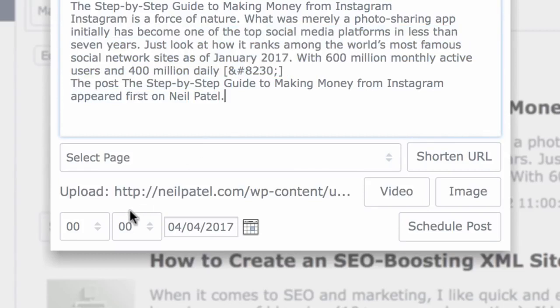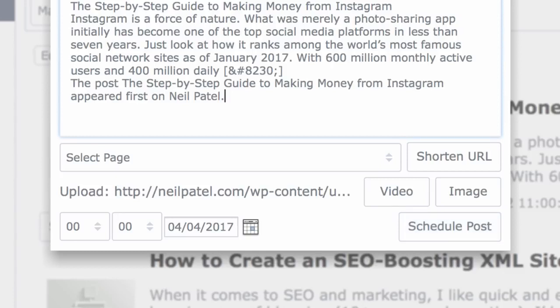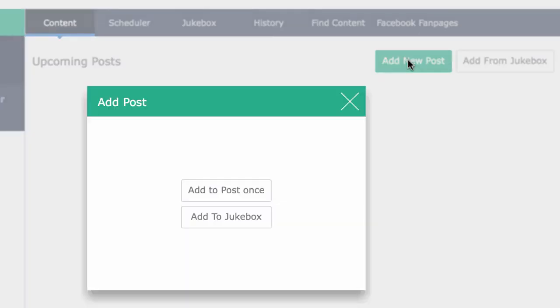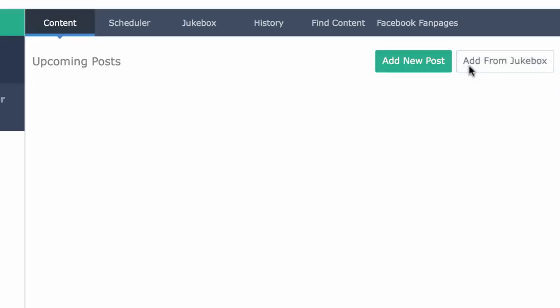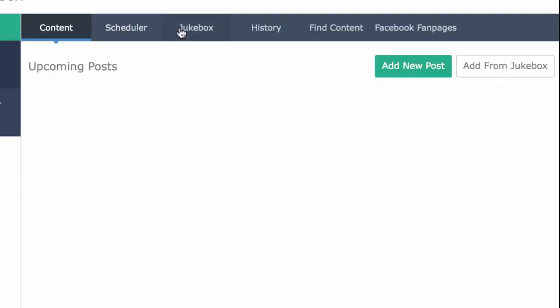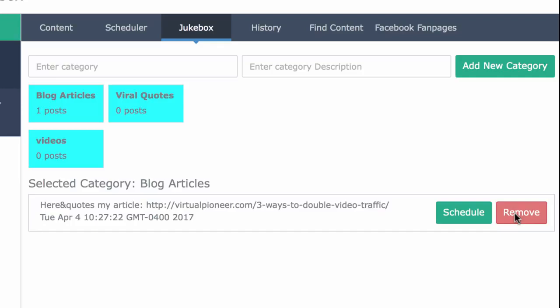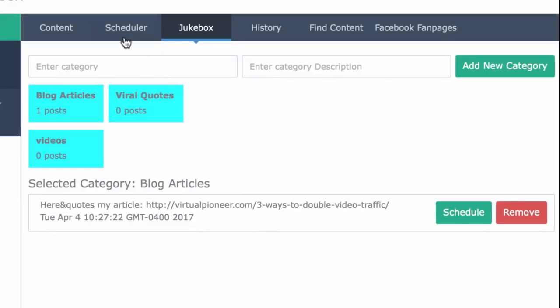And I don't have any unique content available, but can still grow my fan page and get traffic. And if you want to just schedule a one-time-off article or video, you can easily create a new one and schedule it that way, or add an already saved post from one of your jukeboxes. And if you realize one of your quotes or blog posts isn't pulling traffic and isn't resonating with your audience, easily click on the category it's saved under and delete it or replace it with something else.